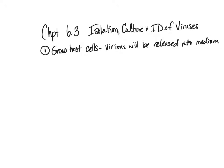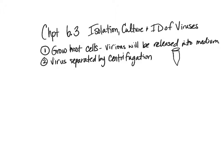We can isolate the virions by separating them from the medium either by centrifugation or filtration. With centrifugation, you put it inside a centrifuge in small test tubes, spin it very fast, and you end up with a layer of viral particles, a layer of bacteria, and the medium. You can then separate out the other parts and recover the virions.